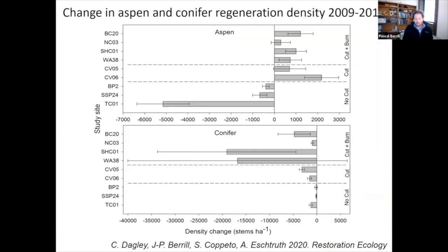Our most recent study looks at conifer and aspen regeneration after pile burning. In the top graph you're going to see that aspen regeneration is declining in the uncut control stands — this is a negative change over time. Whereas in all the treated stands we are seeing a fairly consistent increase in aspen regeneration post-treatment. So that's the good news.